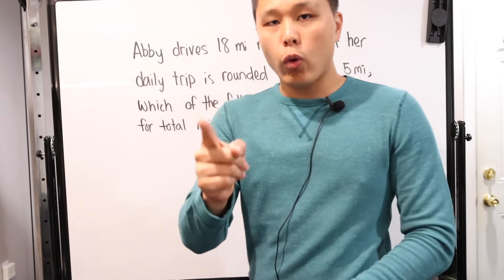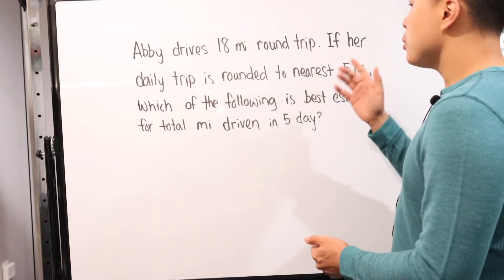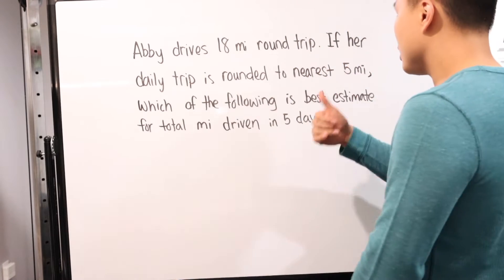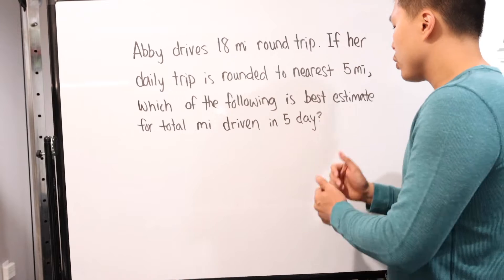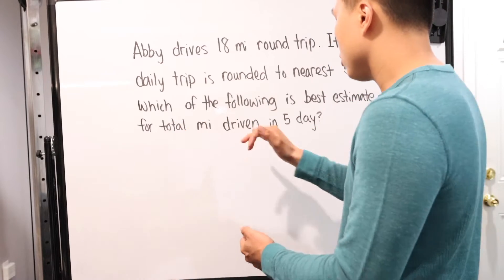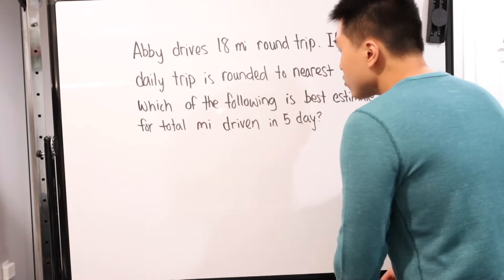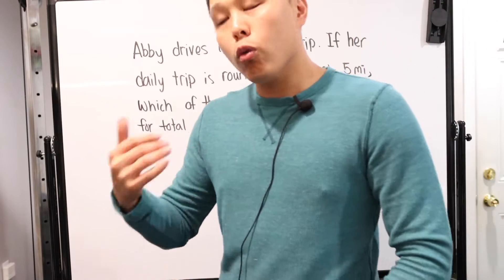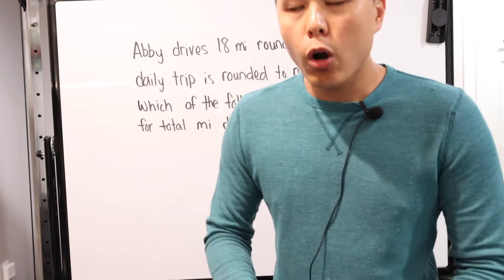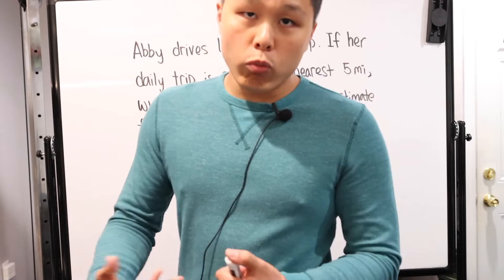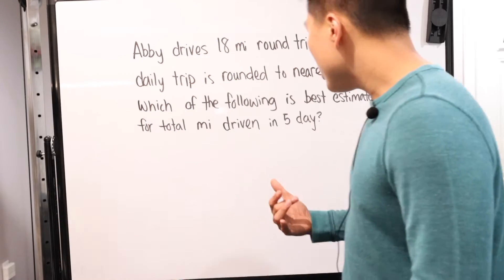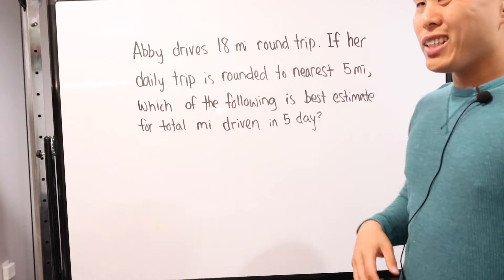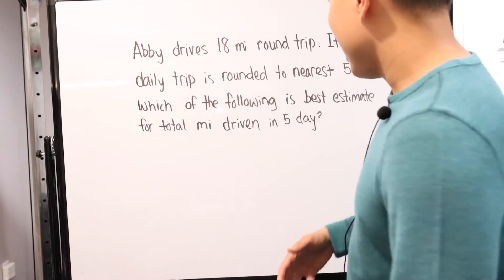So let's talk about the first problem. This one is problem number 41. Abby drives 18 miles round trip. If her daily trip is rounded to the nearest five miles, which of the following is the best estimate for the total number of miles driven in five days? This can be a little tricky because normally when we're rounding, we're rounding to the nearest whole number, or occasionally to the nearest tens, hundreds, thousands. It's really rare to see where they say round to the nearest five miles.